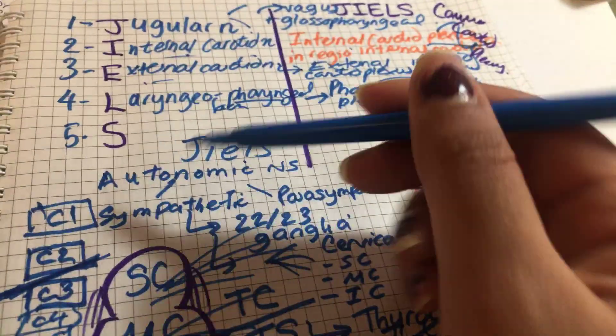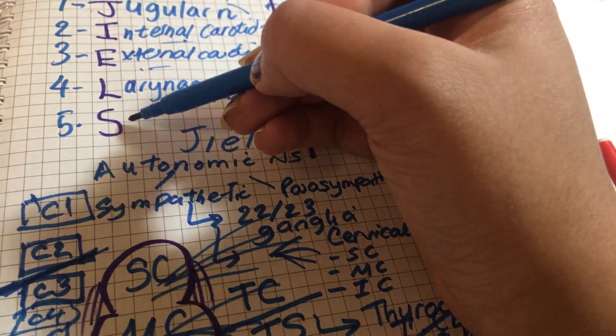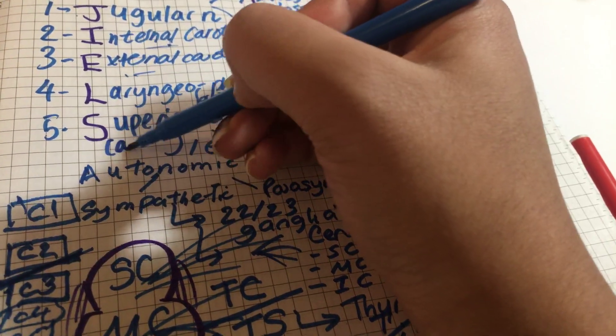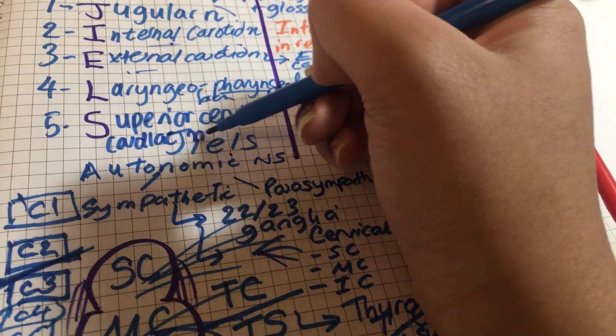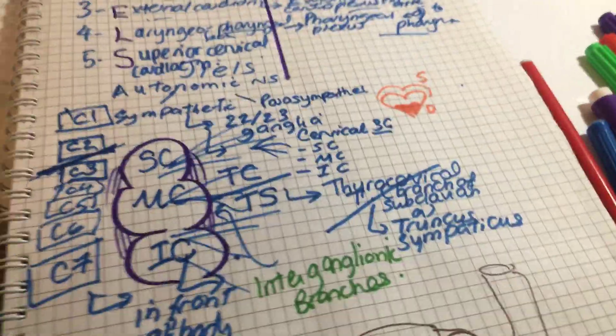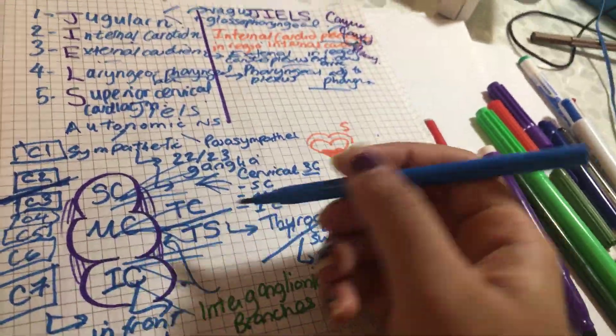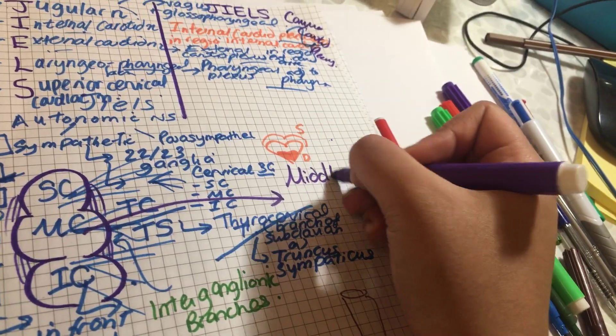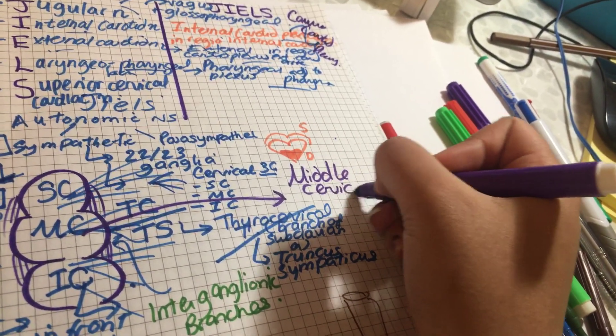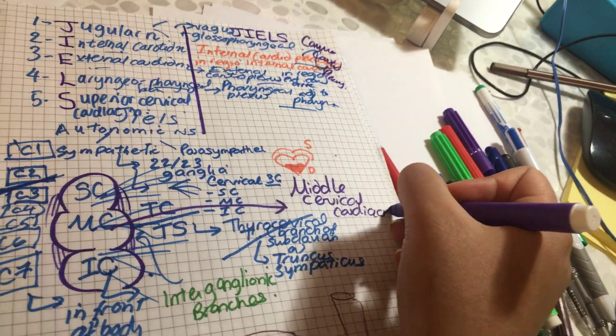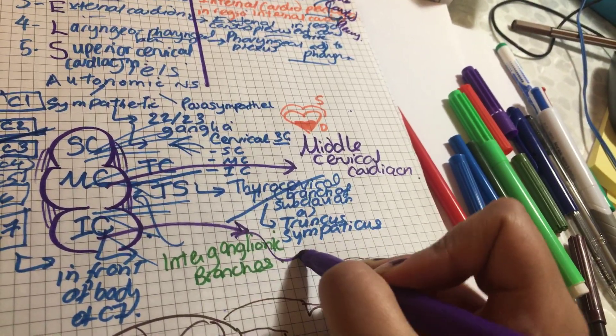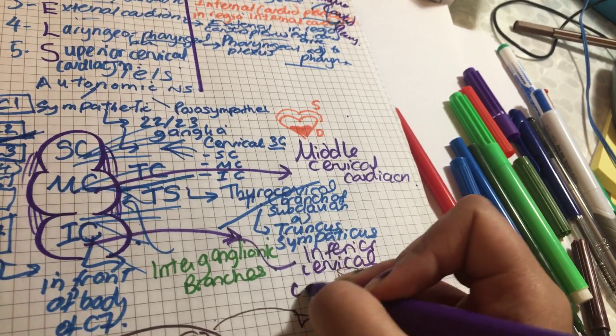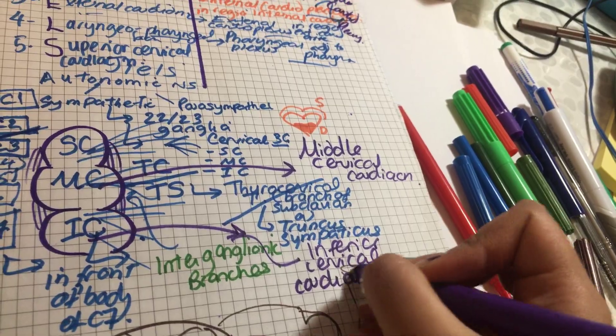And then you also have the superior cervical cardiac nerve. This is a bit different. The middle cervical ganglion gives us the middle cervical cardiac nerve, and the inferior cervical ganglion gives us the inferior cervical cardiac nerve.